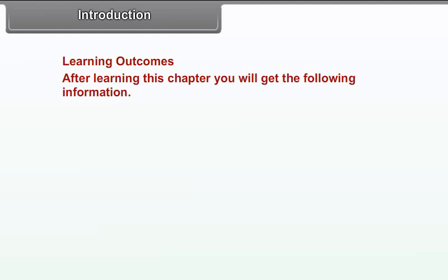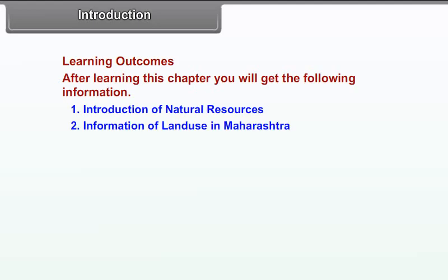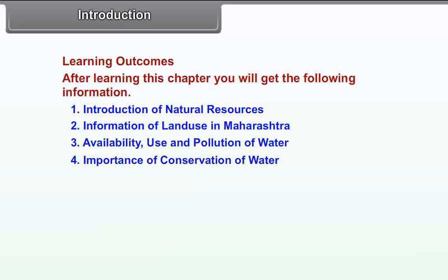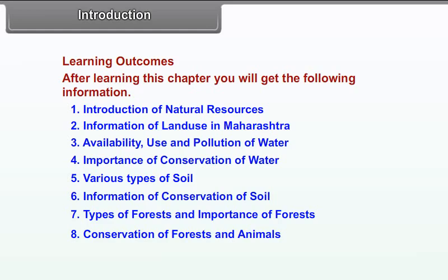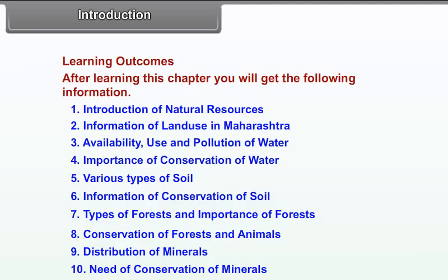Learning Outcomes: After learning this chapter, you will get the following information: 1. Introduction of Natural Resources, 2. Information of Land Use in Maharashtra, 3. Availability, Use and Pollution of Water, 4. Importance of Conservation of Water, 5. Various Types of Soil, 6. Information of Conservation of Soil, 7. Types of Forests and Importance of Forests, 8. Conservation of Forests and Animals, 9. Distribution of Minerals, 10. Need of Conservation of Minerals.